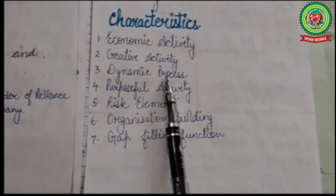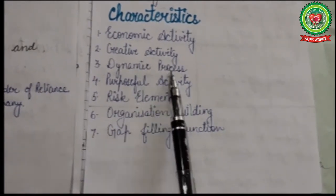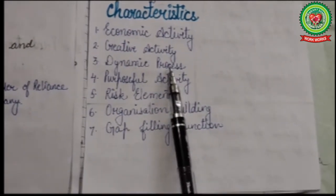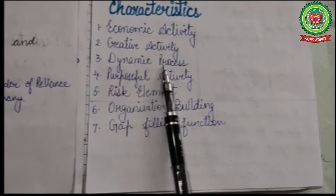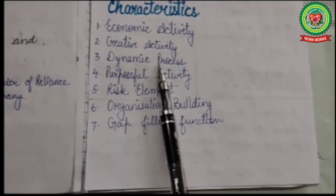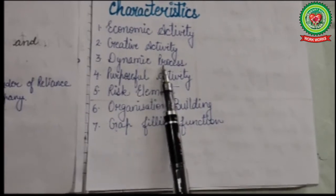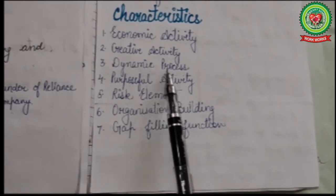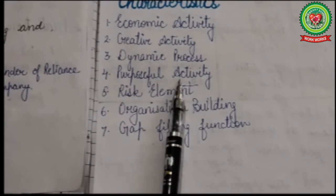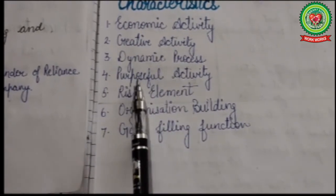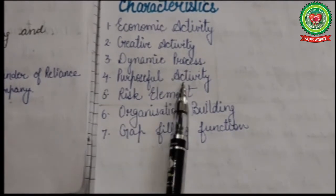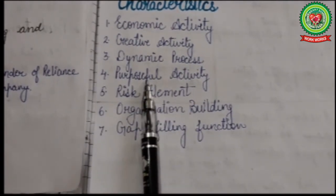Third is dynamic process — it means a changing environment which brings new opportunities for business. Flexibility is a hallmark of the successful entrepreneur, and that is why it is called a dynamic process. Fourth is purposeful activity — entrepreneurship is the purposeful activity of an individual or group of individuals who seek to earn profits.